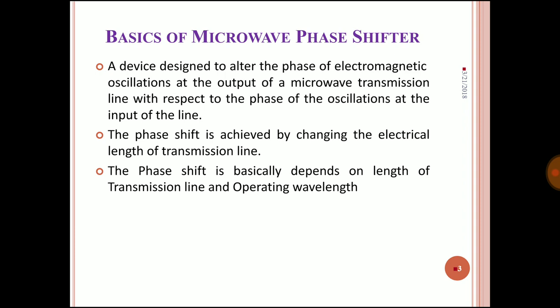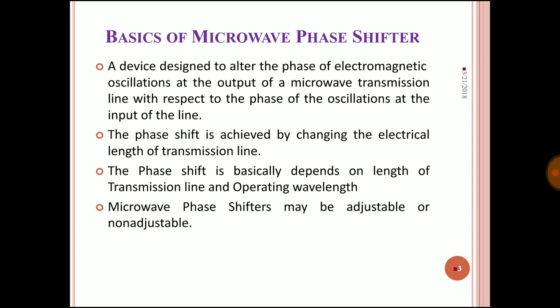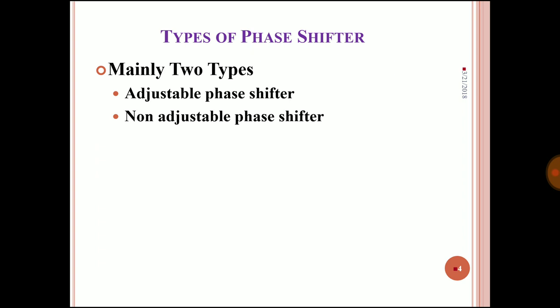By changing the length of the transmission line, one can easily obtain a phase shift. Alternatively, a change in the operating wavelength can also produce a phase shift. Microwave phase shifters may be adjustable or non-adjustable, and I will be explaining both types — adjustable phase shifters as well as non-adjustable phase shifters.